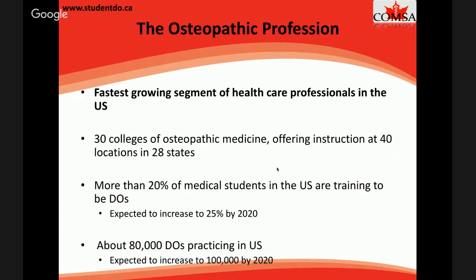Osteopathic medicine is the fastest growing segment of healthcare in the United States. Right now there are 30 colleges of osteopathic medicine at over 40 locations in 28 states, because some colleges have more than one campus — for example, Kirksville also has SOMA, KCU is opening a second campus in Joplin, and PCOM has one in Georgia. More than 20% of US medical students are currently being trained as DOs, and that is expected to grow to 25% by 2020.